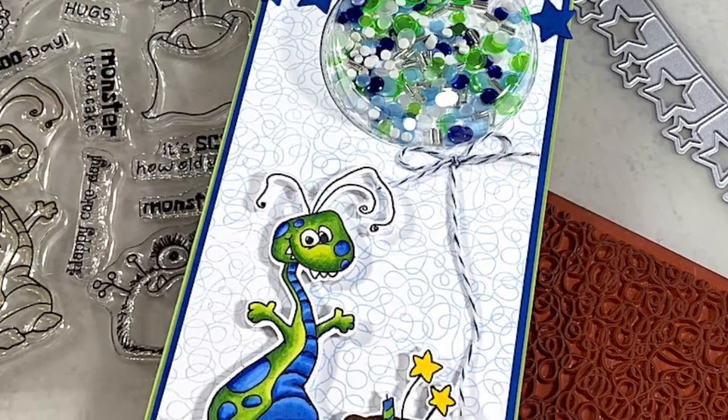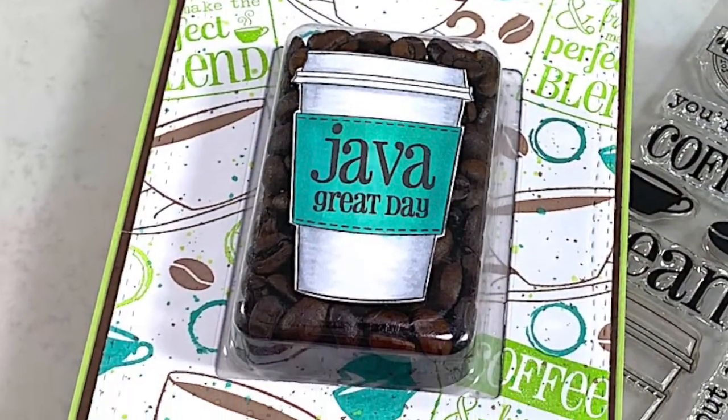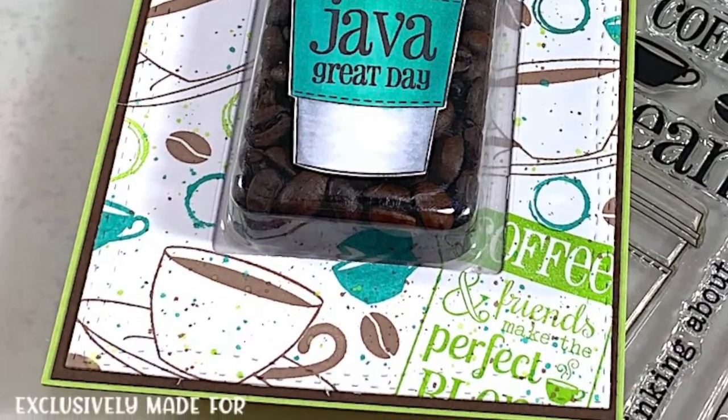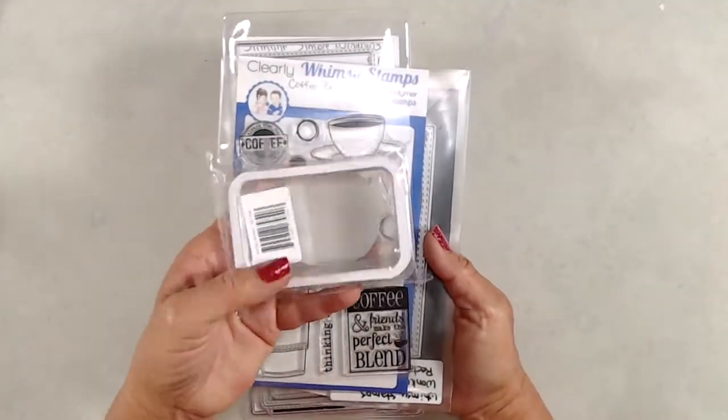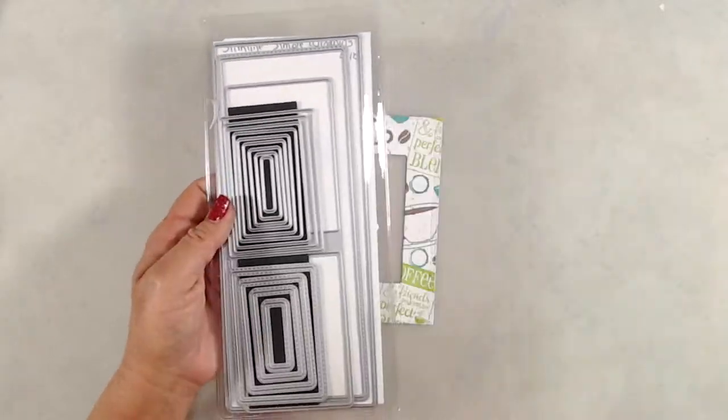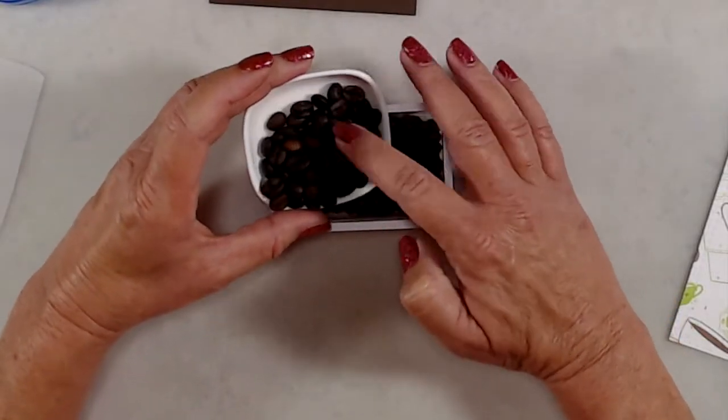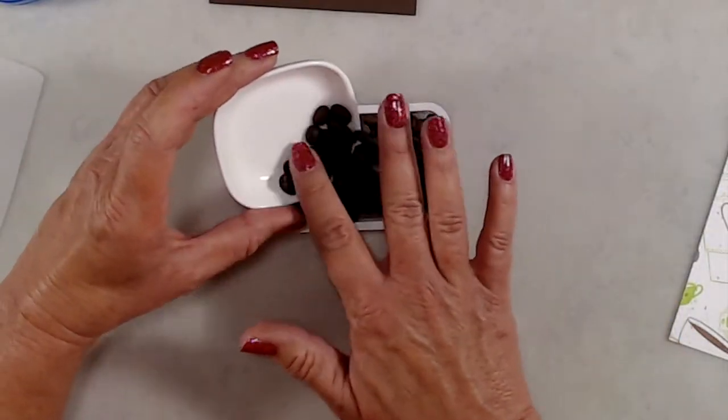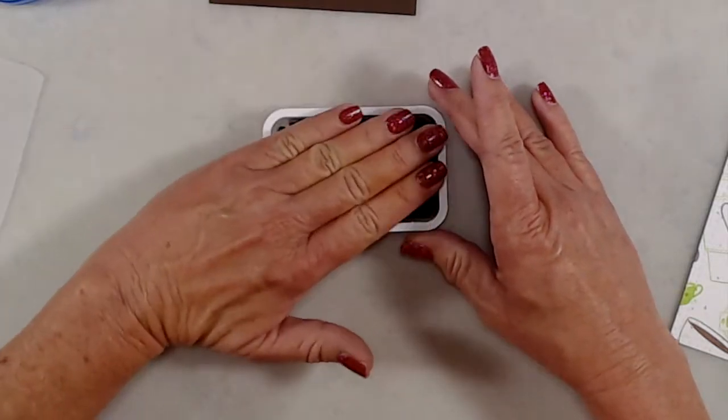Now, moving on to the third card, I wanted to do something a little bit different because these bobble bubbles are deep enough to fill up with things other than just sequin mixes. I thought a coffee-themed card would be really cute to do, so I grabbed some coffee beans and filled up the small rectangle bobble bubble.